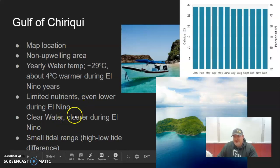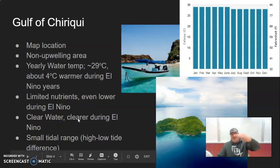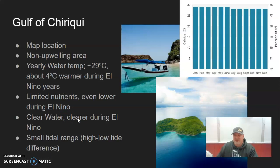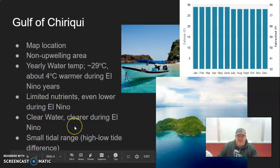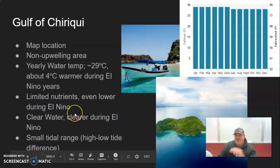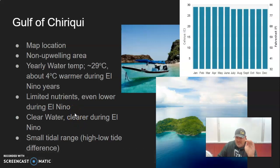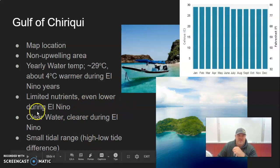The Gulf of Chiriqui has a pretty small tidal range — the difference from high tide to low tide is about 10 feet, which is actually pretty big for us but not as big a deal for them. So the average difference from highest tide to lowest tide is about 10 feet, at least that's what I could find.